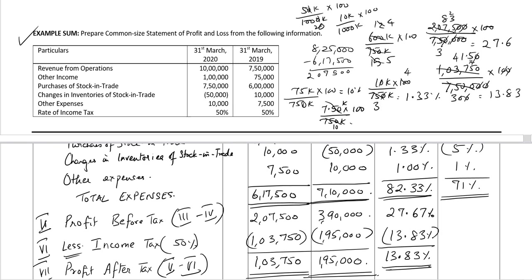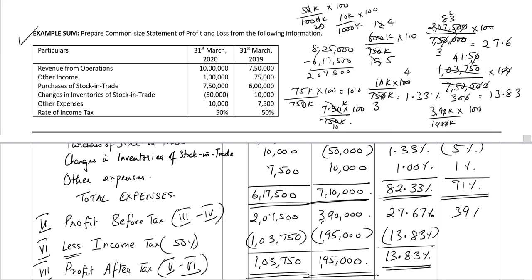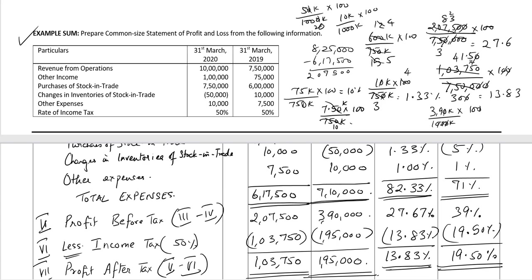Profit before tax for 2020: ₹3,90,000 divided by ₹10,00,000 multiplied by 100 equals 39%. Income tax is half of that — 19.50%. Profit after tax is also 19.50%.